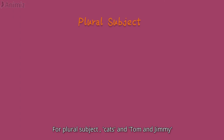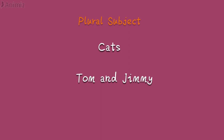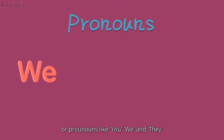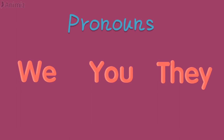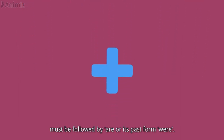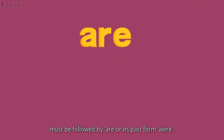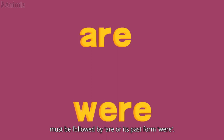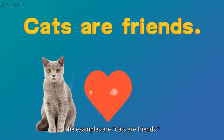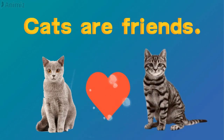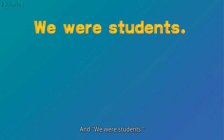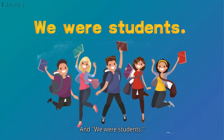For plural subjects — cats, Tom and Jimmy — or pronouns like we, you, they, must be followed by 'are' or its past form 'were'. The examples are: cats are friends, and we were students.